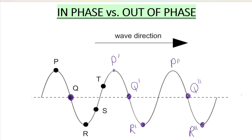What about S? S is when you've started at the equilibrium position, gone up to the crest, gone down to the trough, and just after you pass the trough, you get S. The next one would start at the equilibrium position, go up to the crest, go down to the trough, and just after the trough — that's where you get your second S. Those are in phase, so connecting them gives one complete wavelength. My next S would be over here.